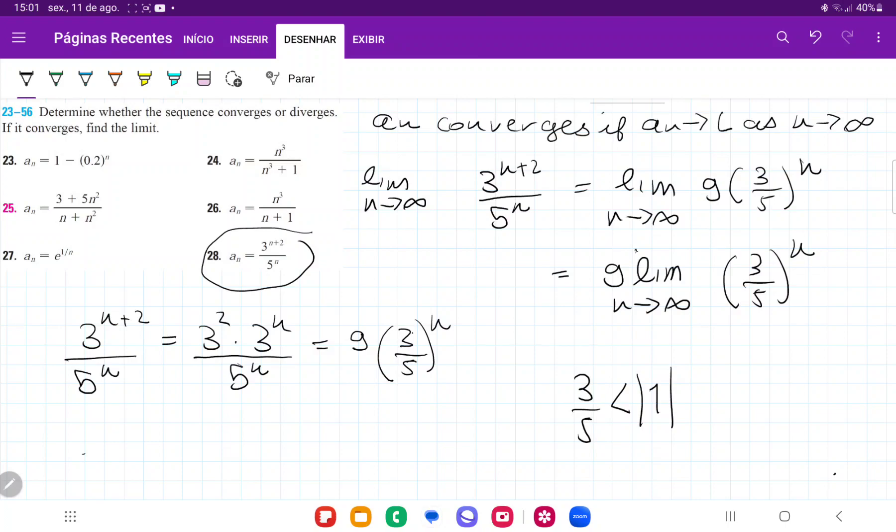Well, it means that whenever we put n as we're going on, we're going 3/5 times 3/5 times 3/5 times 3/5, and so on. And so, because 3/5 is less than 1, it's 0.6, every single time we're multiplying it and we're making it get smaller and smaller.